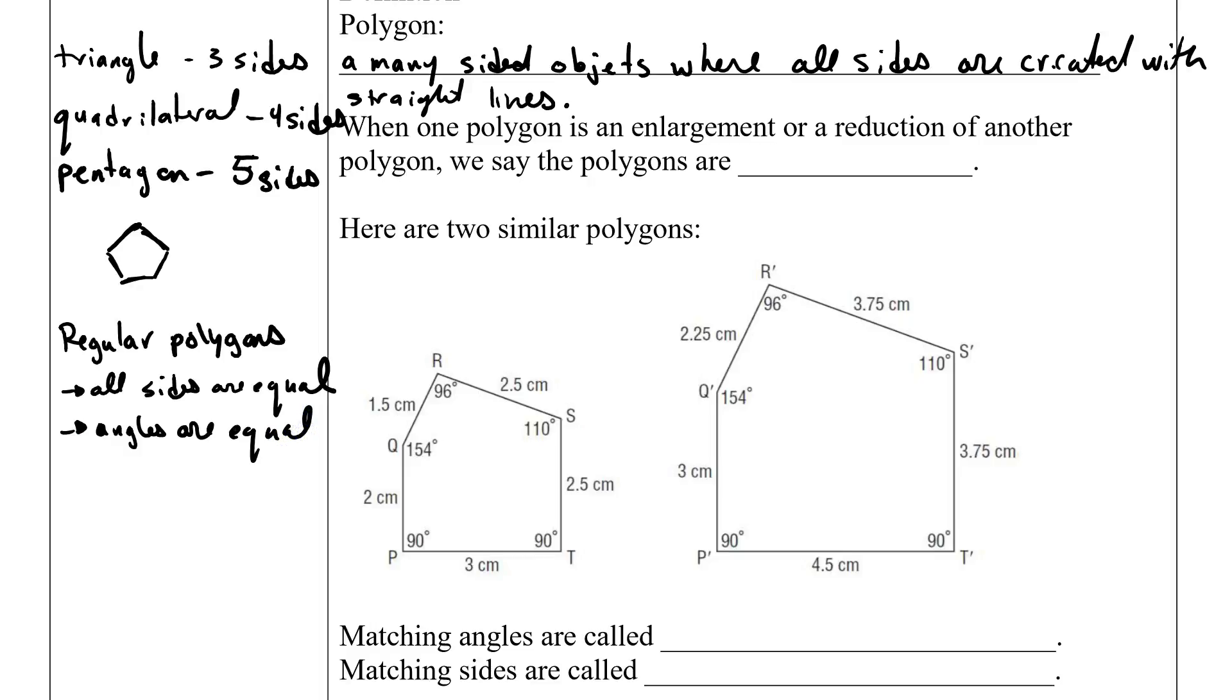So you can see that this is not a regular pentagon because there's 1.5, there's two, there's three centimeters. And inside we have two 90s, but we also have a 110, 96, and a 154. So they're not all equal.